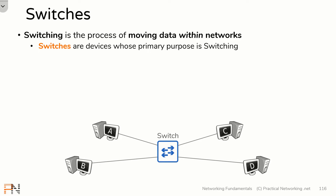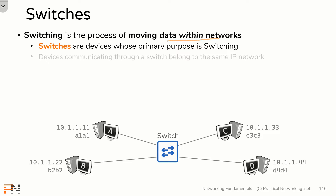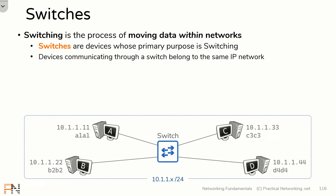For these hosts to communicate with one another, they each need IP addresses and MAC addresses. Since a switch only facilitates communication within a network, all of these devices speaking through the switch must belong to the same IP network. In this case, that IP network is the 10.11.x network. In this lesson, we're going to illustrate everything that the switch does to enable communication between host A and host D.